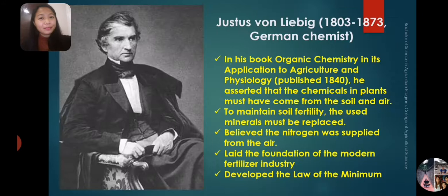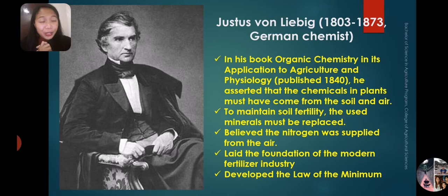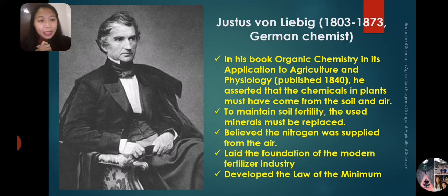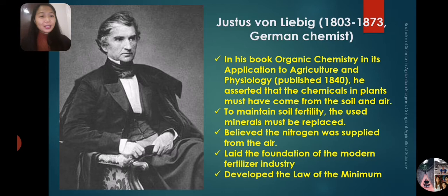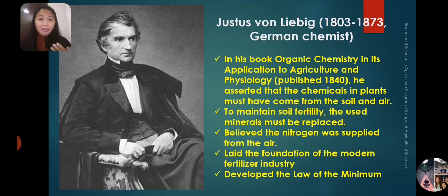Justus von Liebig existed from 1803 to 1873. He was a German chemist who published the book Organic Chemistry and Its Application to Agriculture and Physiology in 1840. He asserted that the chemicals in plants must have come from the soil and the air. He also stated that to maintain soil fertility, the minerals used by plants must be replaced. He believed that nitrogen was supplied from the air.